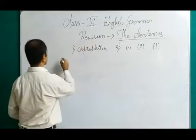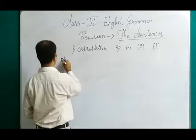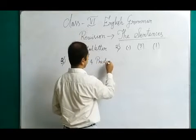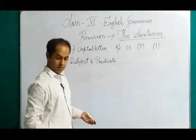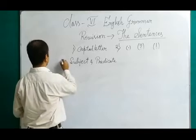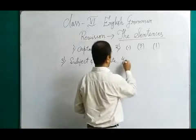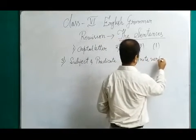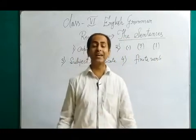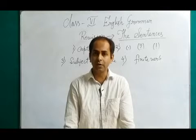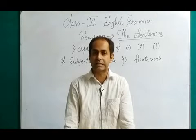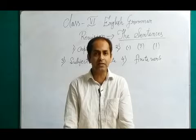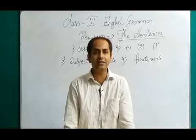A sentence must have a subject and a predicate. The most important feature is that a sentence must have a finite verb. The verb is like the heart of the sentence — without the verb, a sentence does not have any existence. A finite verb is the verb which changes with a change in subject and a change in tense.